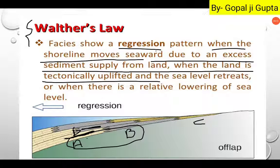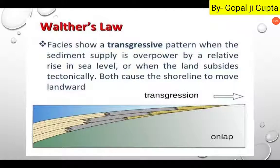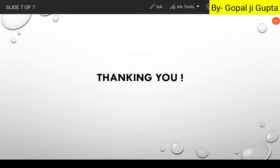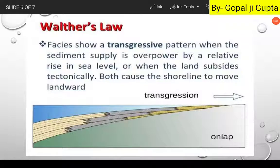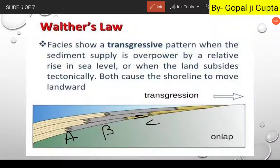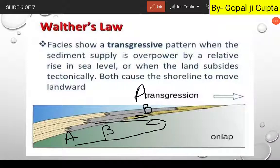Now let us see another example of transgression. This image shows transgression. The facies are here as A, B, and C. Above C — the yellow one — you are getting the B facies, which is gravel. So the sequence is C, B, and then A. Again, before it was horizontal, now we are getting it vertical. This is the application of Walter's Law.